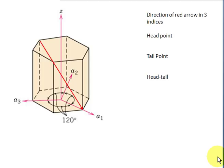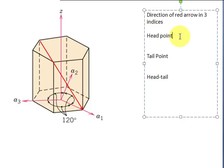In order for you to determine the direction in an HCP unit cell, first you must neglect this A3 axis and find the direction indices using the axis A1, A2 and Z. So let's say now we want to find the direction of the red arrow in three indices, you do the same thing as you did for the cubic unit cell.